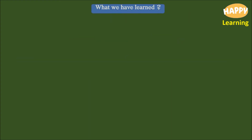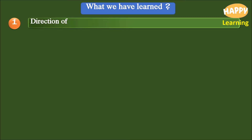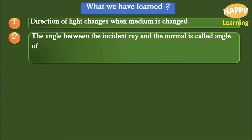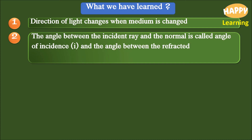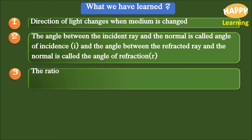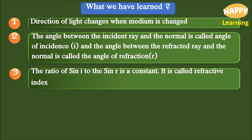What we have learned: Point 1 — the direction of light changes when the medium is changed. Point 2 — the angle between the incident ray and the normal is called the angle of incidence, represented by i, and the angle between the refracted ray and the normal is called the angle of refraction, represented by r. Point 3 — the ratio of sin i to sin r is a constant, called the refractive index of the second medium with respect to the first medium.